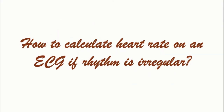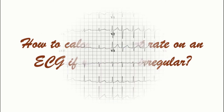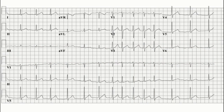Hi, my name is Dr. Nitin and today I am going to show you how to calculate the heart rate on an electrocardiogram if the rhythm is irregular. For example, this ECG has atrial fibrillation and the RR interval is variable.